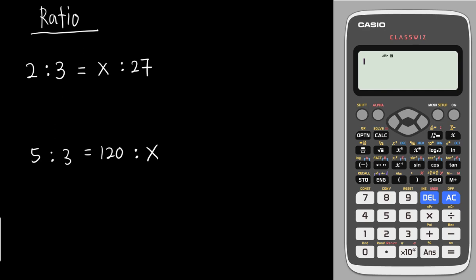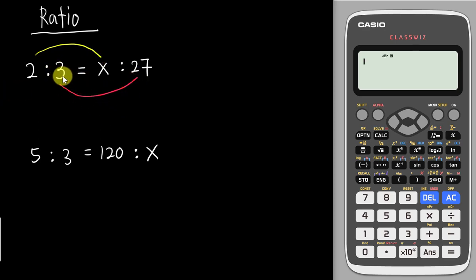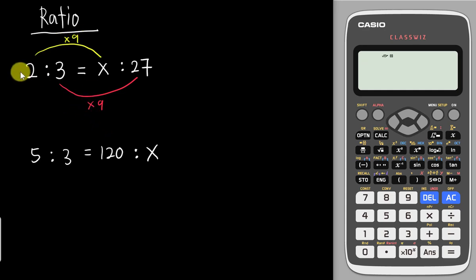One method to solve ratios is to compare the first number with the first number, and the second number with the second number. You can see that 3 goes into 27 by multiplying by 9. So if you multiply by 9 on one side, you multiply by 9 on the other side as well. Therefore X equals 18.